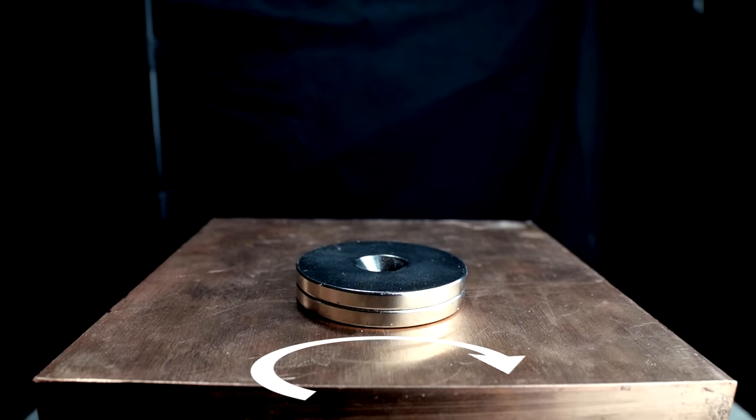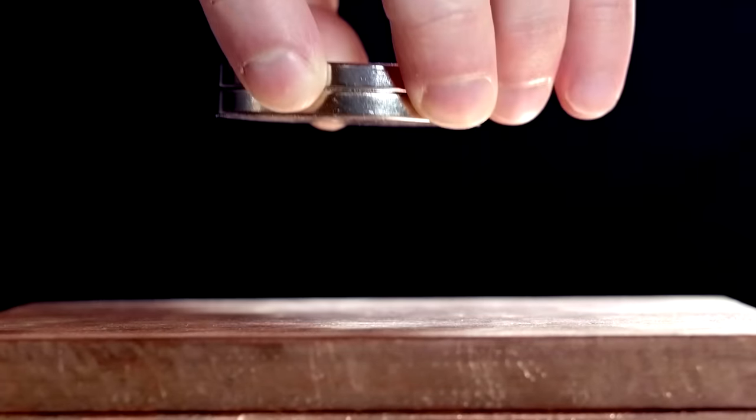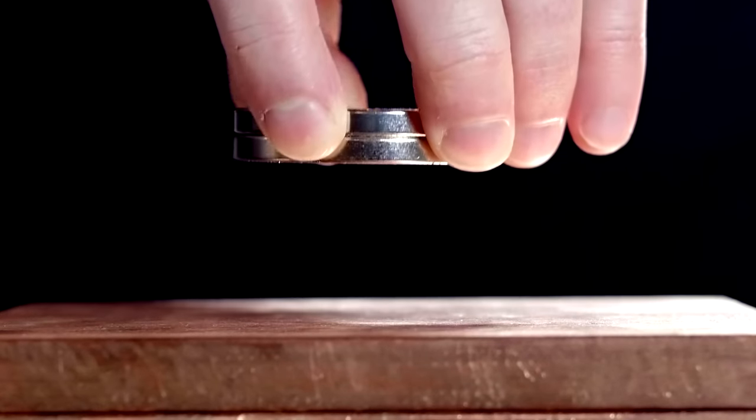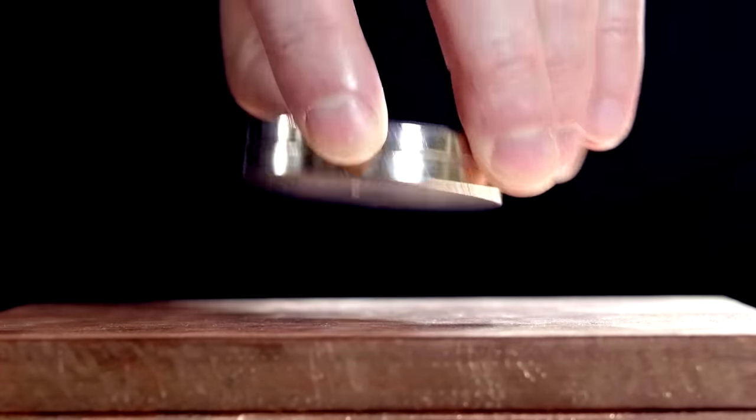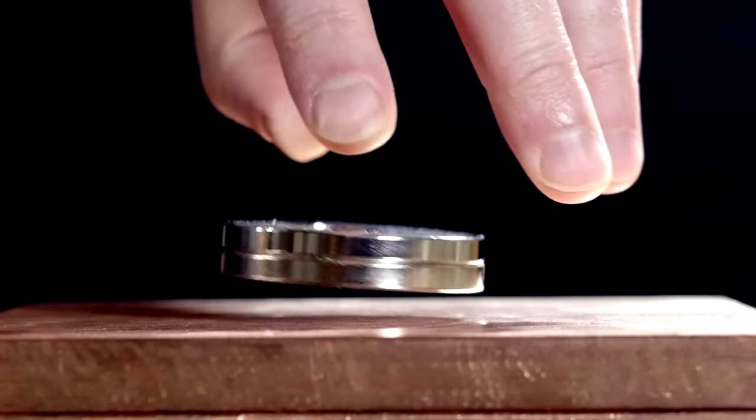Of course, the electrons were perfectly happy being where they were before the magnet tried moving them around, and so they resist this movement by generating a temporary magnetic field of their own. There's no attraction or repulsion, just resistance to change.